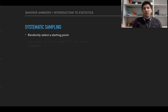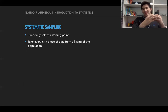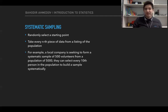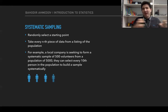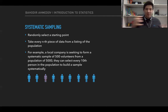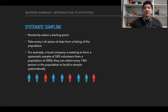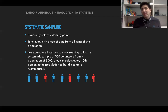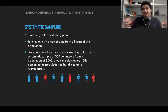The last sampling method is systematic sampling, which involves putting people in a line and choosing them using some system. For example, you might put male students in a line, assign them numbers, and choose every third male — or every k-th member where k could be a Fibonacci number or prime number. The starting point is chosen randomly, then every n-th member is selected using a systematic formula.